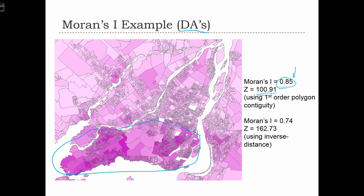If instead we change from using a first-order polygon contiguity structure to using an inverse distance weight matrix, we see that Moran's I can change. The X values haven't changed at all, but the value of autocorrelation that we measure has gone down to 0.75. At the same time, our Z-score has increased — going up to 162. So we can see that the analysis is very sensitive to this weight matrix.